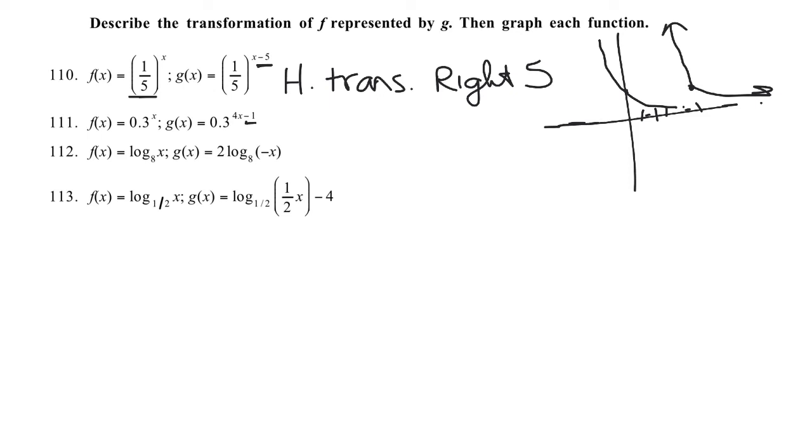3 to the x, we're going to talk about our translations first. Our horizontal translation comes first, so horizontal translation right 1, followed by a horizontal, because it's in the exponent, so that's in the function, shrink factor of 1/4.